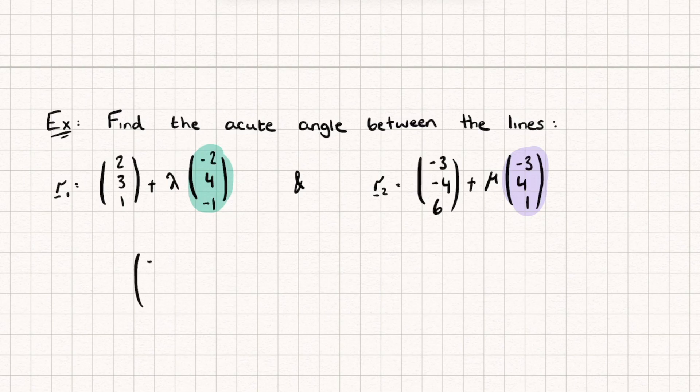So I'm going to do negative two, four, negative one, dot negative three, four, one. And that's going to give me a result of six plus 16 minus one, which is going to be 21.